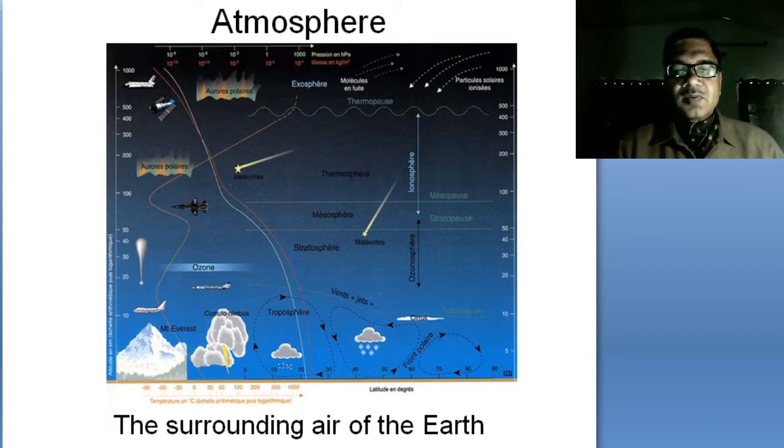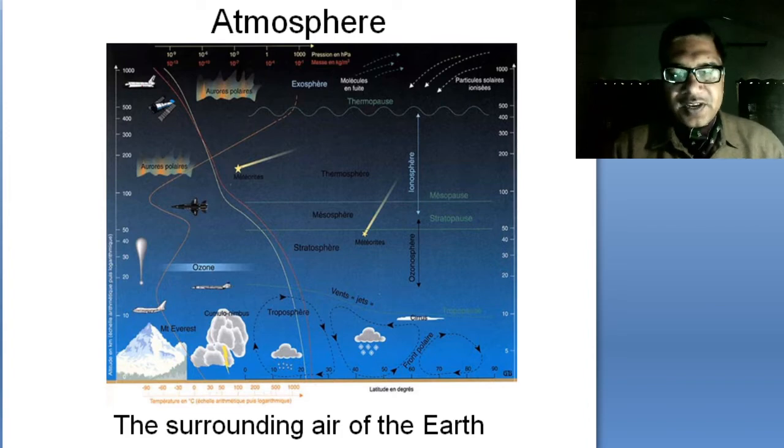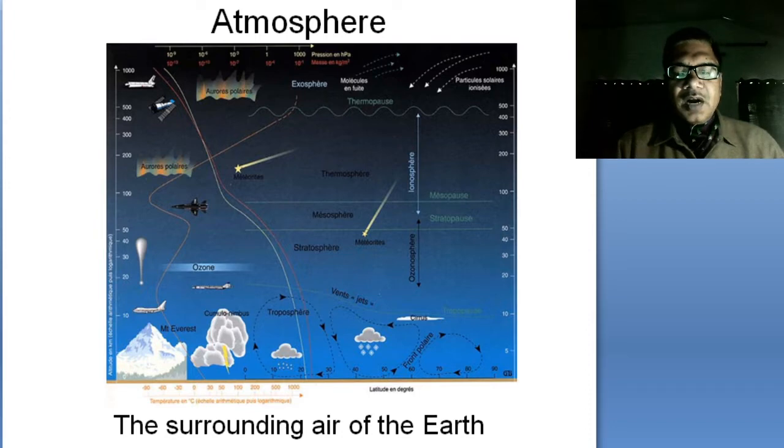We already studied that the earth's atmosphere is comprising of various types of gases and each of these gases have their own importance. Apart from gases there are so many other things which are found in the earth's atmosphere. We will talk about them one by one.